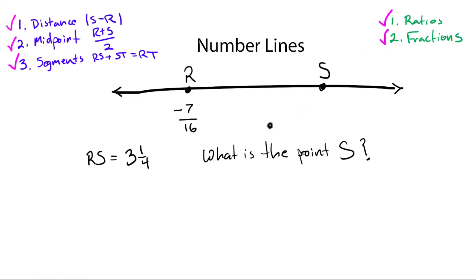So let's take a look real quick. Point r, as shown on the number line, is minus seven sixteenths. We know line segment rs given is three and a quarter. So that length there is three and one quarter.